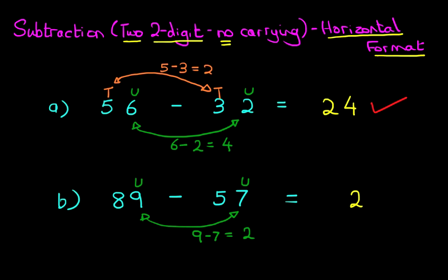Next we are going to do the tens. We have got 8 tens minus 5 tens. Let's draw the arrow across and write this down. 8 minus 5. So what is 8 minus 5? 8 minus 5 is 3.